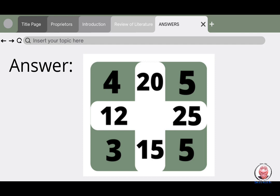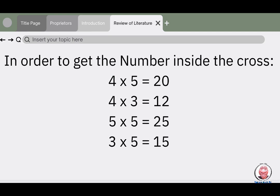5 times 5 equals 25, 3 times 5 equals 15.